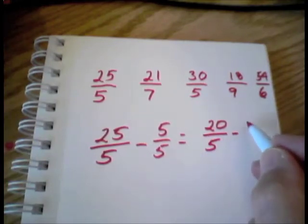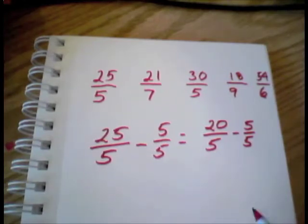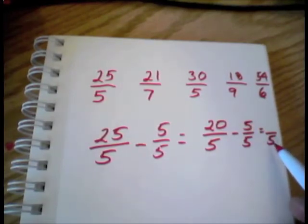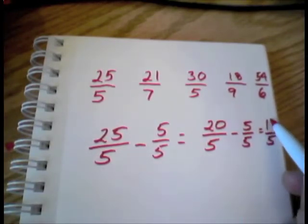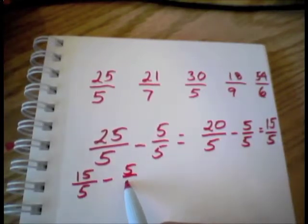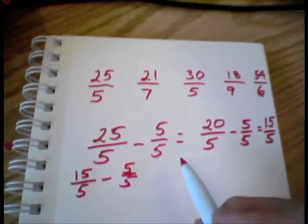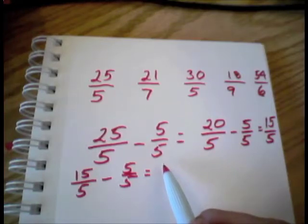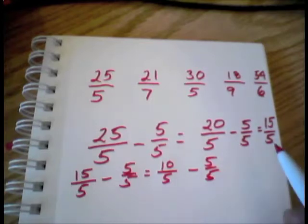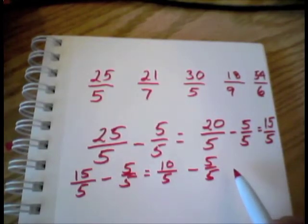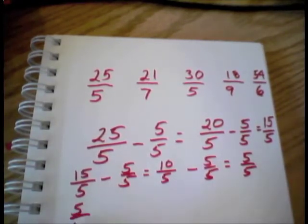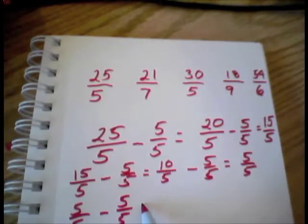Then we keep going. We subtract 5 more fifths. 20 fifths minus 5 fifths equals 15 fifths. I'll take another 5 fifths out. 15 fifths minus 5 fifths is 10 fifths. Let's take another 5 fifths out. 10 fifths minus 5 fifths equals 5 fifths. What's 5 fifths minus 5 fifths, Havana? 0 fifths.